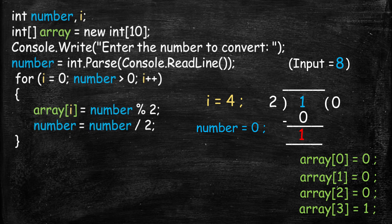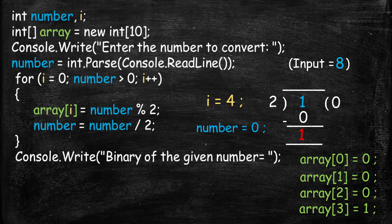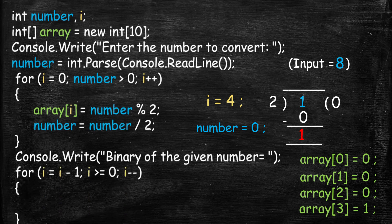So our array at index 0 is 0, at index 1 is 0, at index 2 is 0, and at index 3 is 1. Now we need to print this array, but the binary number is in reverse form. The binary number of 8 is 1 0 0 0, so we need to print the array in reverse. For the second for loop, we start i at the current i value minus 1, so that our starting index is 3.